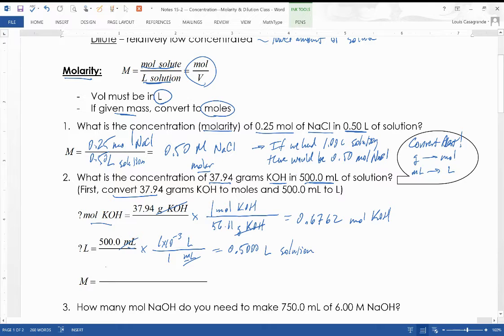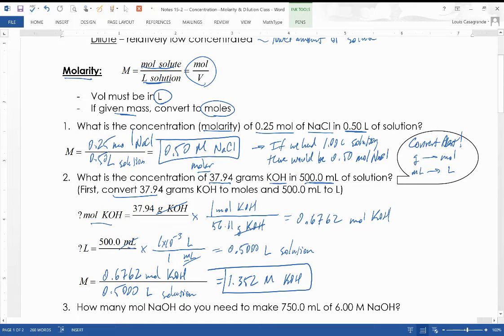And now we put it all together. 0.6762 moles of KOH divided by 0.5000 liters of solution. And you do that math, we get 1.352 molar KOH. Let's box in our answers. Let's box in the answer up above as well. All right, hopefully not too difficult so far.